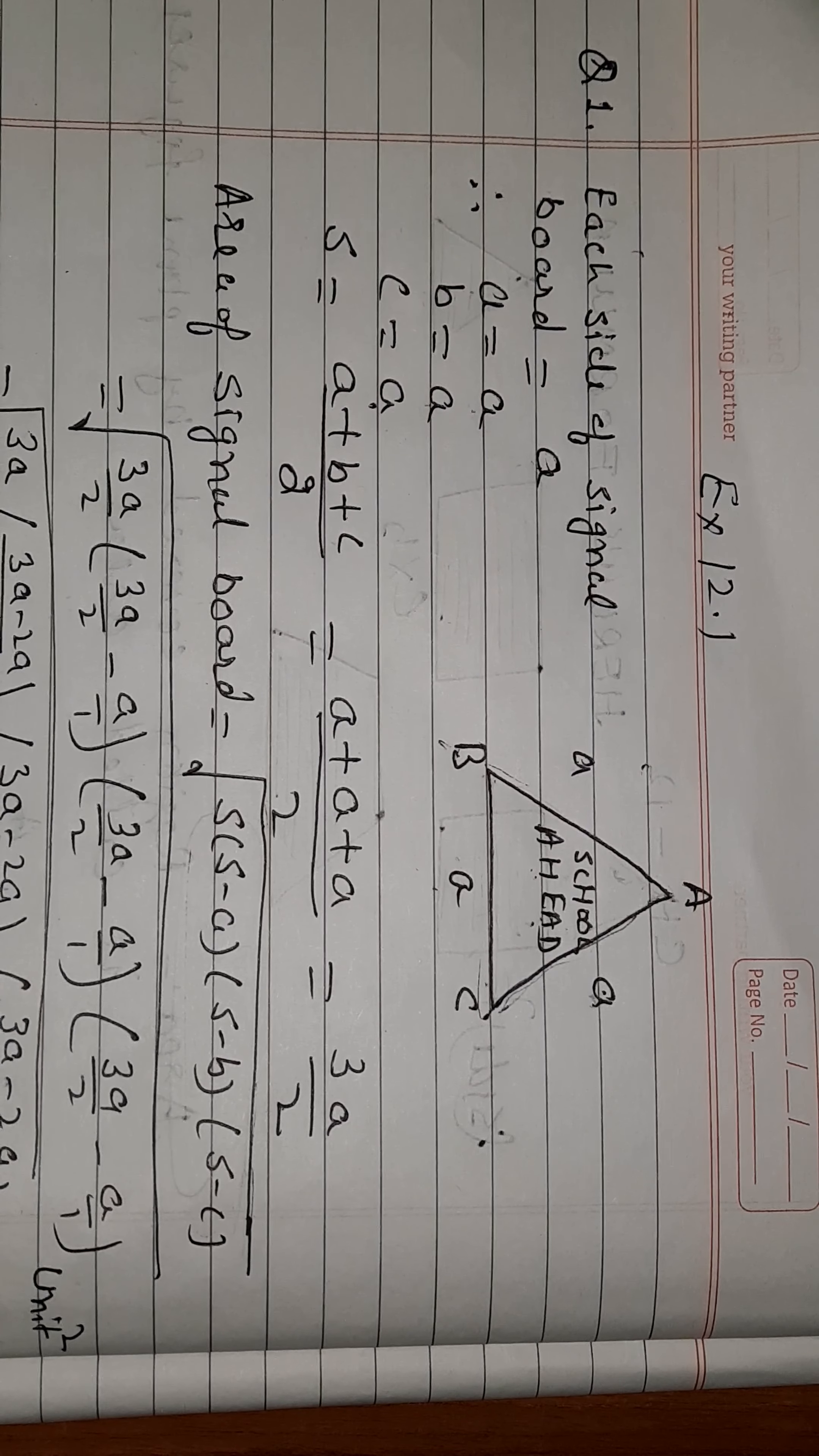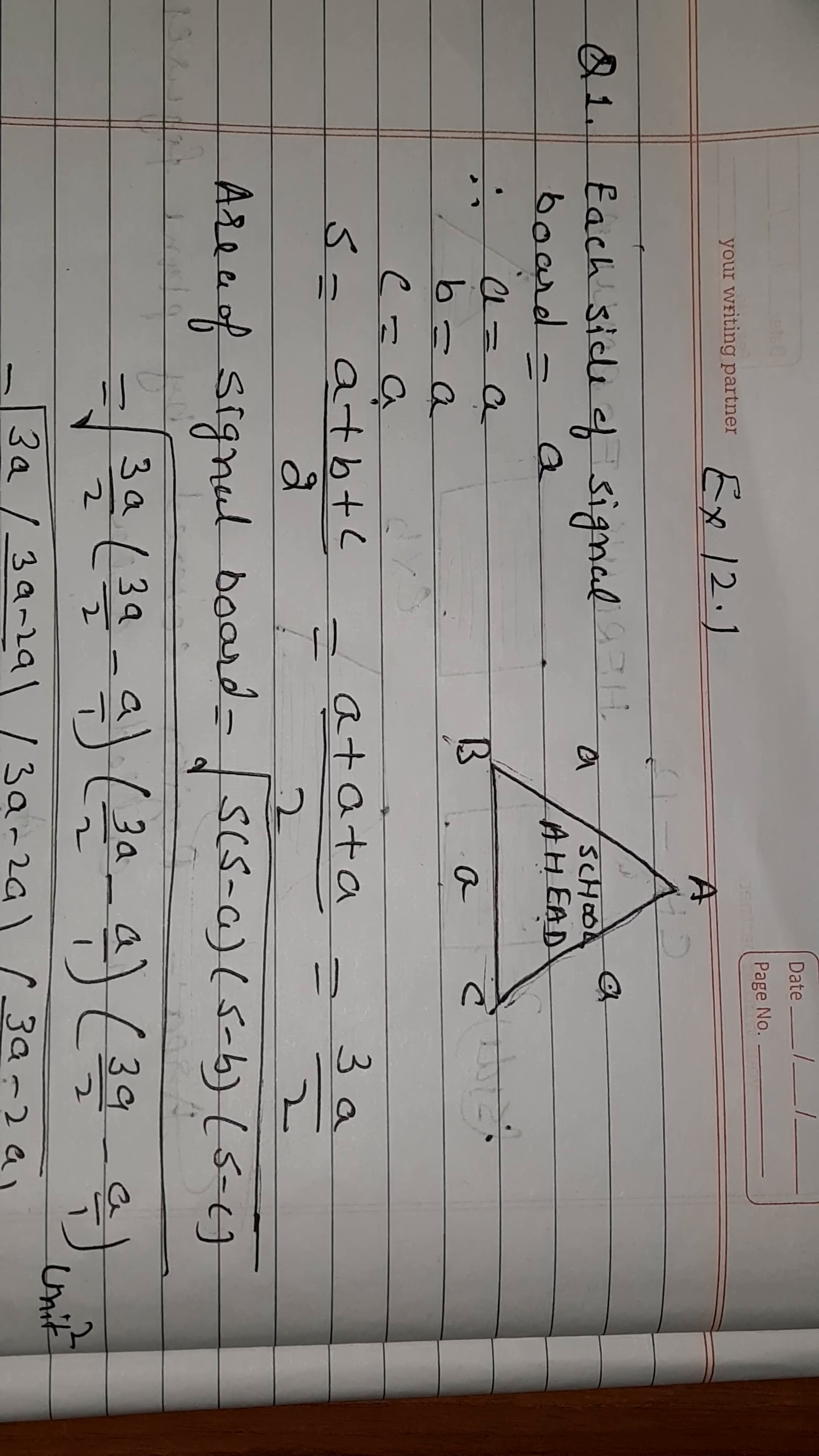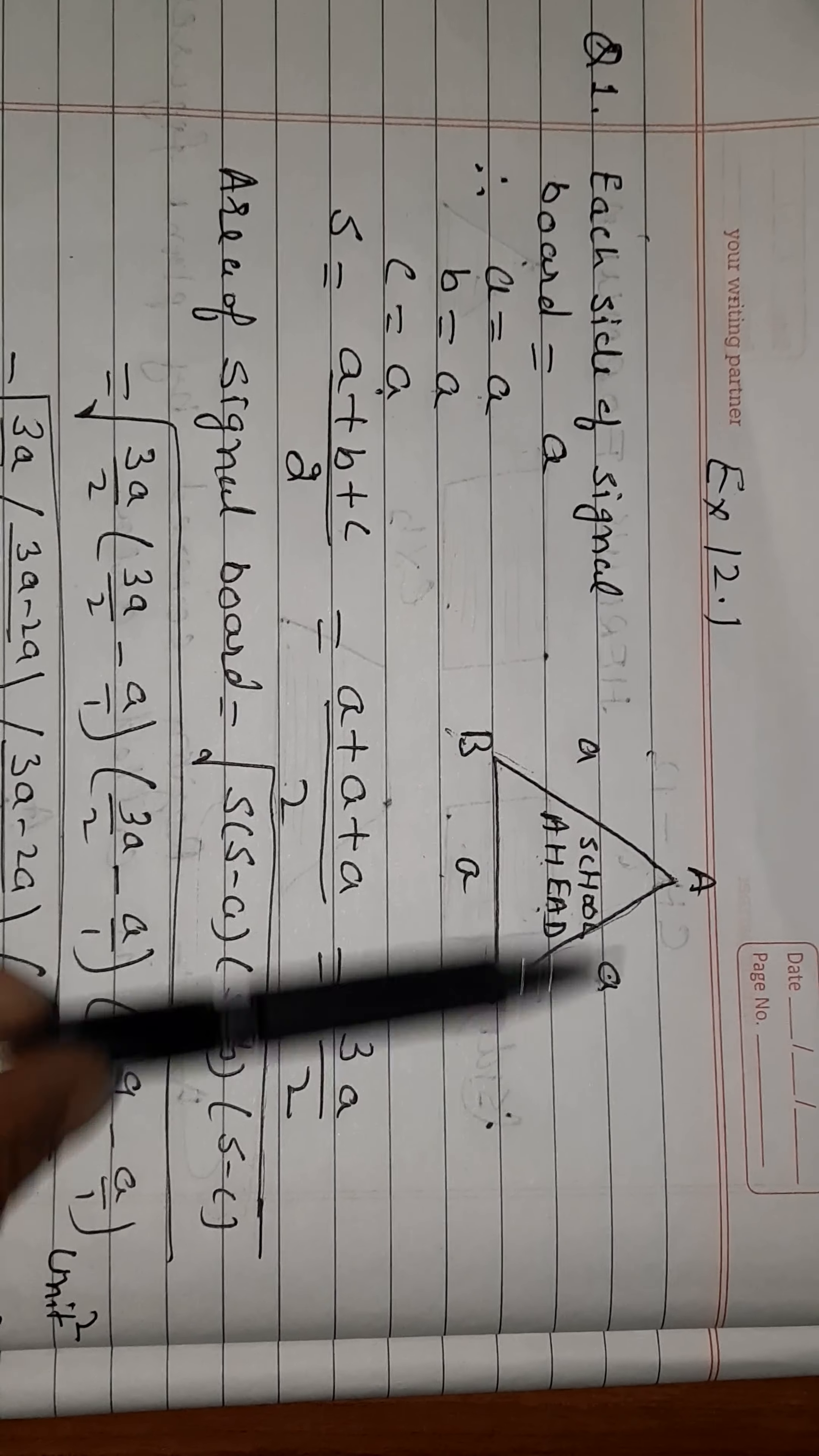In part 2 we shall solve sums using Heron's formula, exercise 12.1, question number 1. A traffic signal board indicating 'school ahead' is an equilateral triangle with side a. Find the area of the signal board using Heron's formula if its perimeter is 180 centimeters. What will be the area of the signal board?